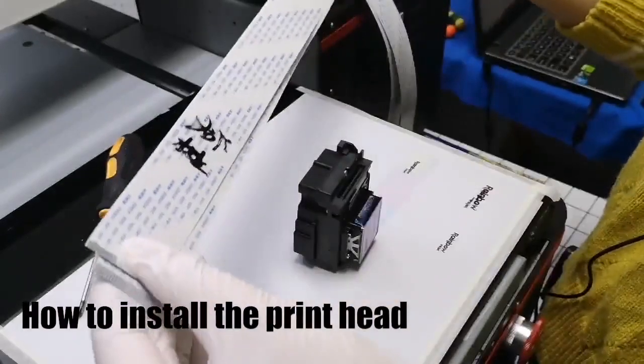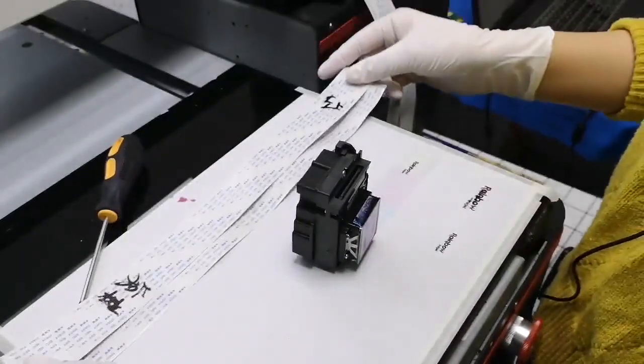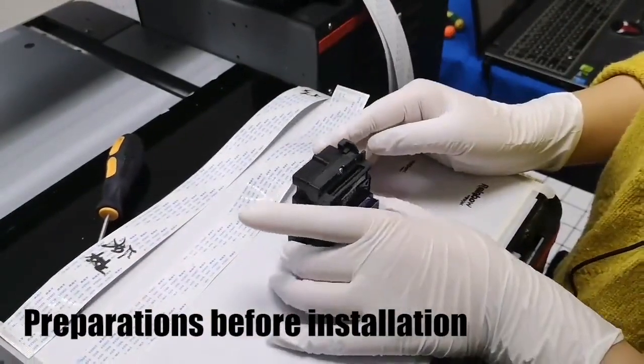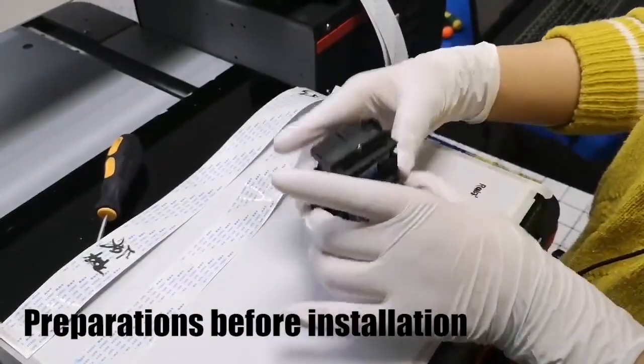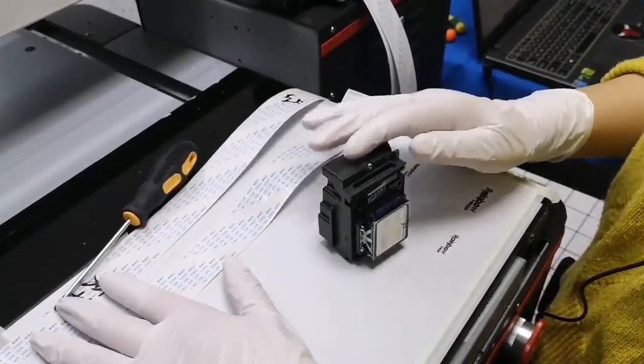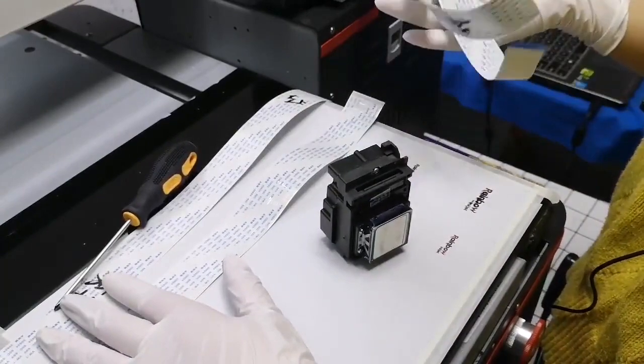Today we teach how to install the printhead. First, after you receive the machine, if you are a single-head printer, you will find one printhead and two cables. If you have two printheads, you will find two heads and four cables.